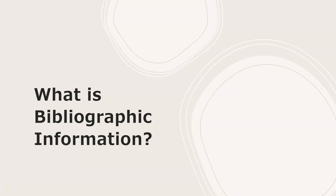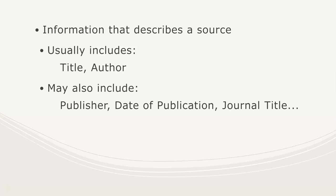To start off, what is bibliographic information? Bibliographic information is the information that describes a source. It usually includes at least the author and title of the work in question, and may include more complex information such as publisher, date of publication, journal title, volume number, issue numbers, and so on.